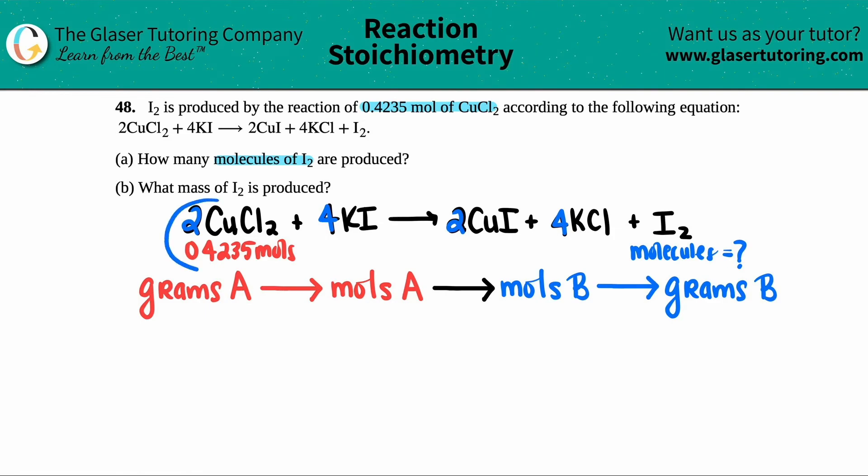So for example, where are we starting here? Oh, they already gave us moles of CuCl₂. Now just look at the color coding here. The red is for the information that they gave you. And you notice how I put this in red. The blue is what you want. And you notice how I put this in blue. So they already gave us the moles of CuCl₂. So I'm over here.